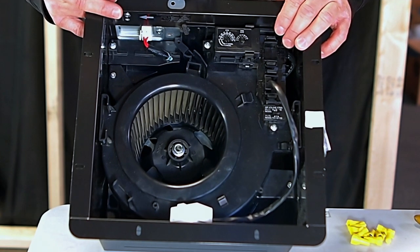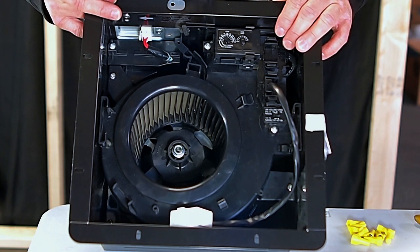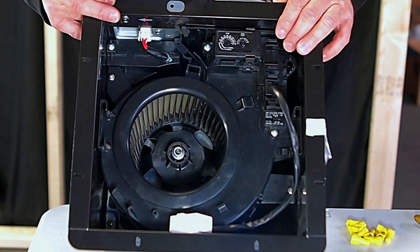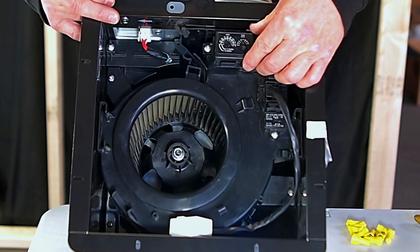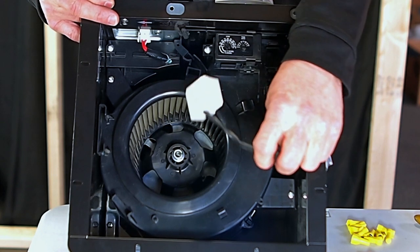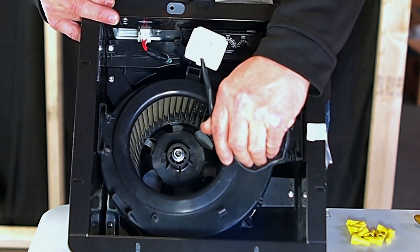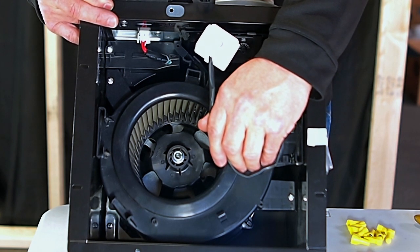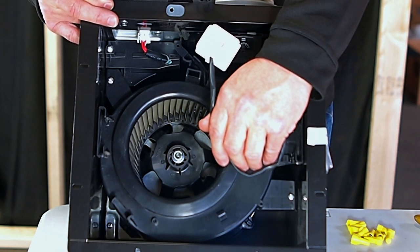The fan we are wiring is a Panasonic Whisper Green Select FV0511 VKS-1. This fan comes with a multi-speed timer pre-installed. We have added the motion sensor which will activate the fan whenever someone enters the room. This is how we will achieve spot ventilation. We will need to bring non-switched constant power to this fan.